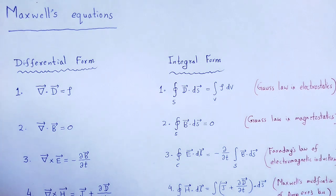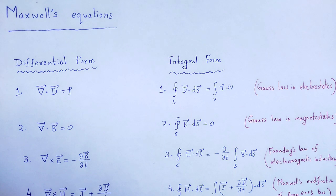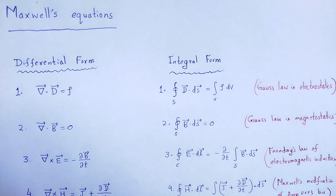Maxwell's equations are the fundamental equations to describe all the phenomena of electromagnetic theory. Maxwell compiled the equations derived by Gauss, Faraday, and Ampere regarding electromagnetism. According to Maxwell, he proposed four equations to describe the properties of electromagnetic waves and various phenomena related to electromagnetic theory.